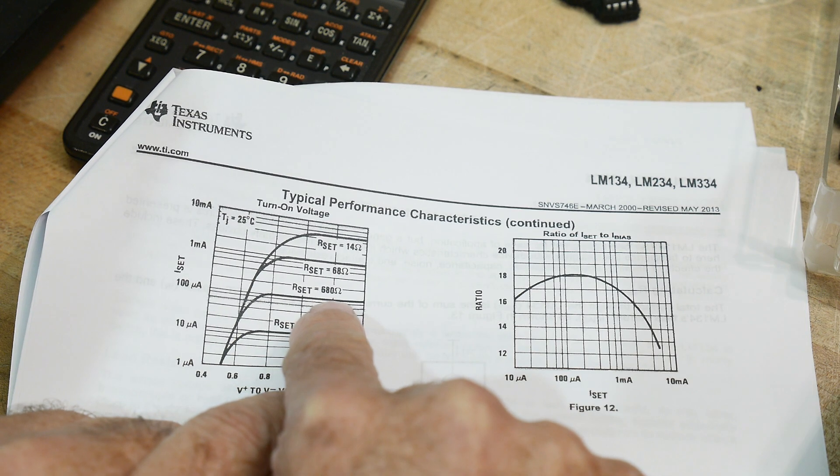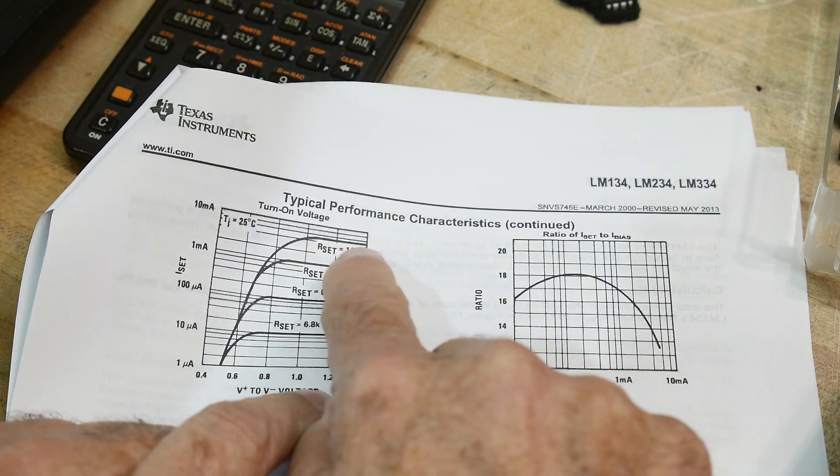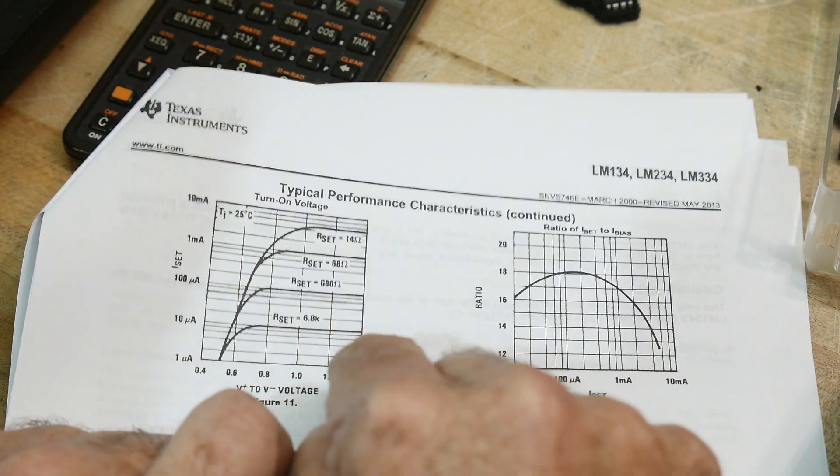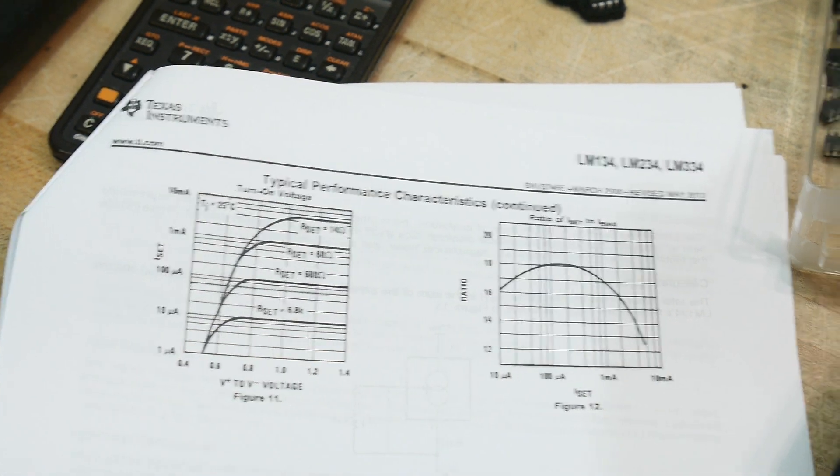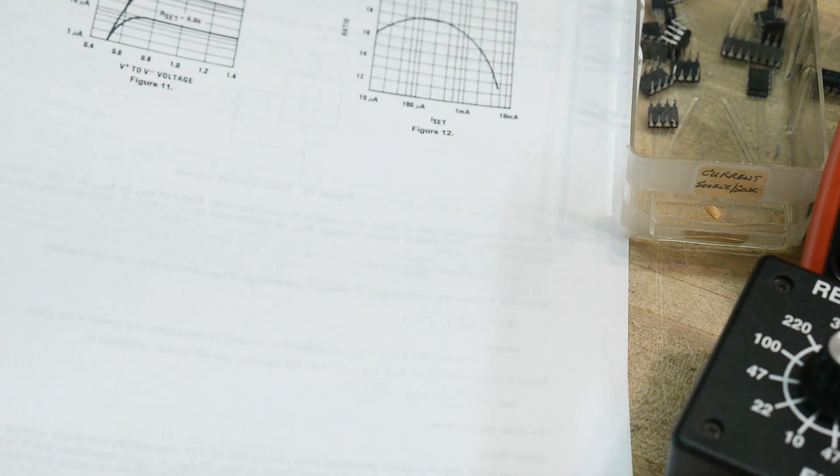6.8K, 680 ohms, 68 ohms, 14 ohms. So, the higher the ohms, the more current you have going through there, right? And so, let's go ahead and hook one up and play with it.